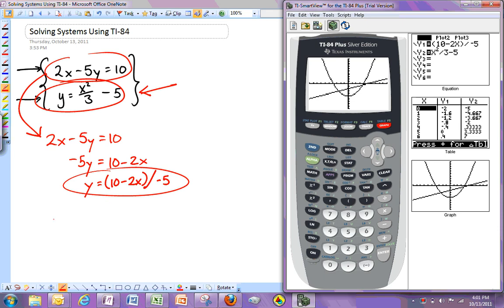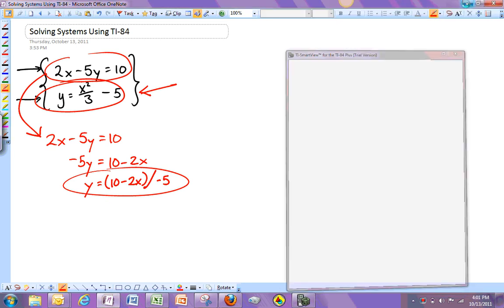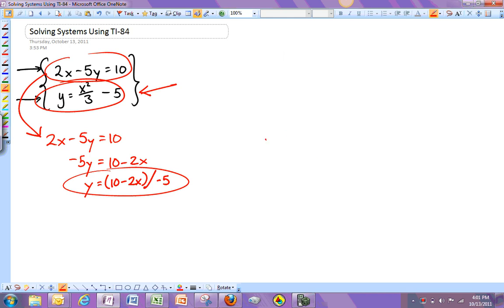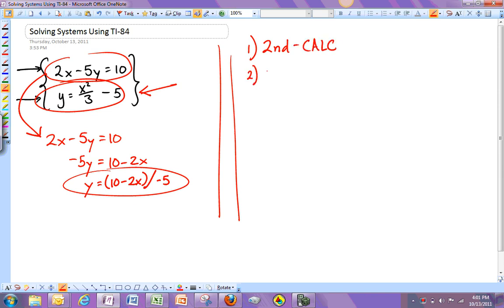So remember the key here is going to be, I'm going to minimize this for a second. The key here is that we need to get to the calc menu. So again, the way that works is we're going to go to second calc. We're going to find the intersect feature. And then we have to answer three questions. First curve. Second curve. And guess.